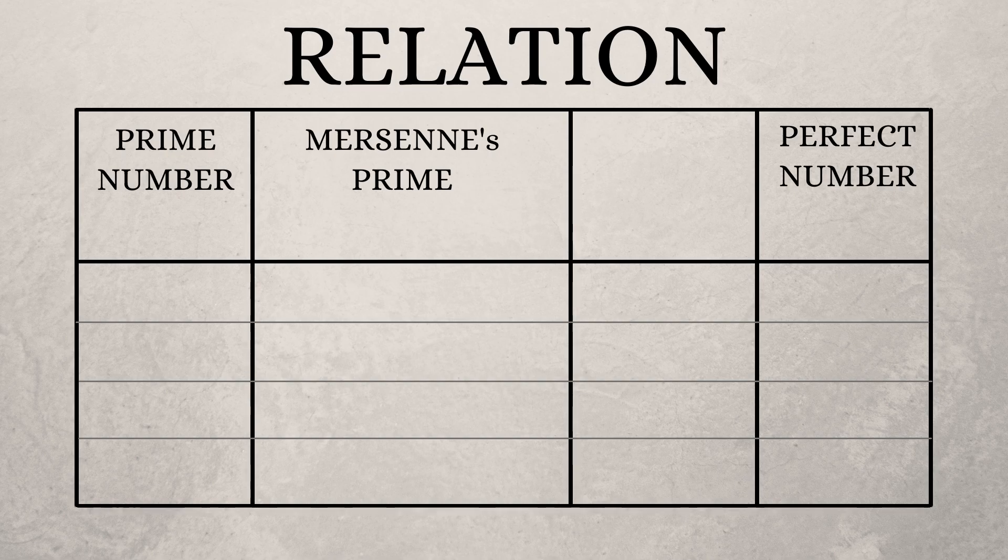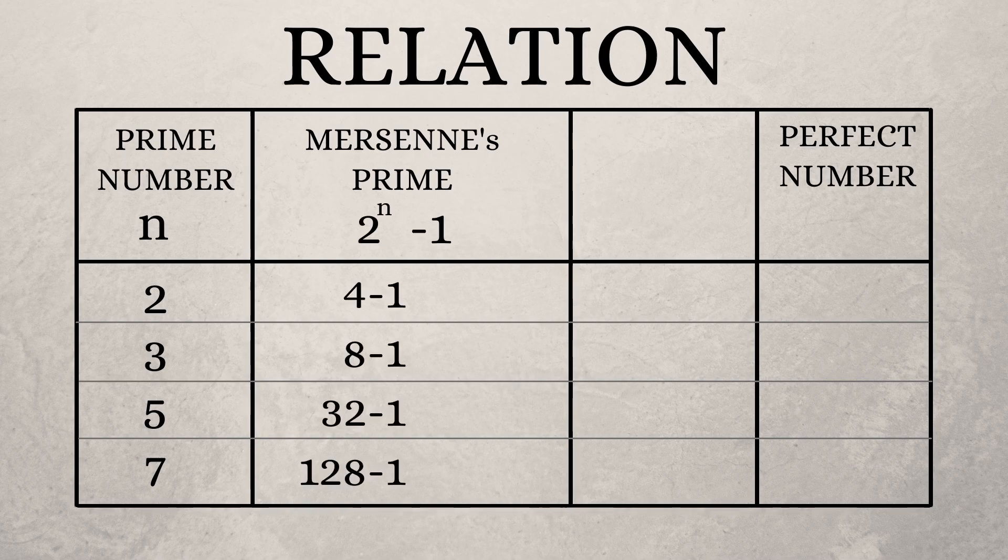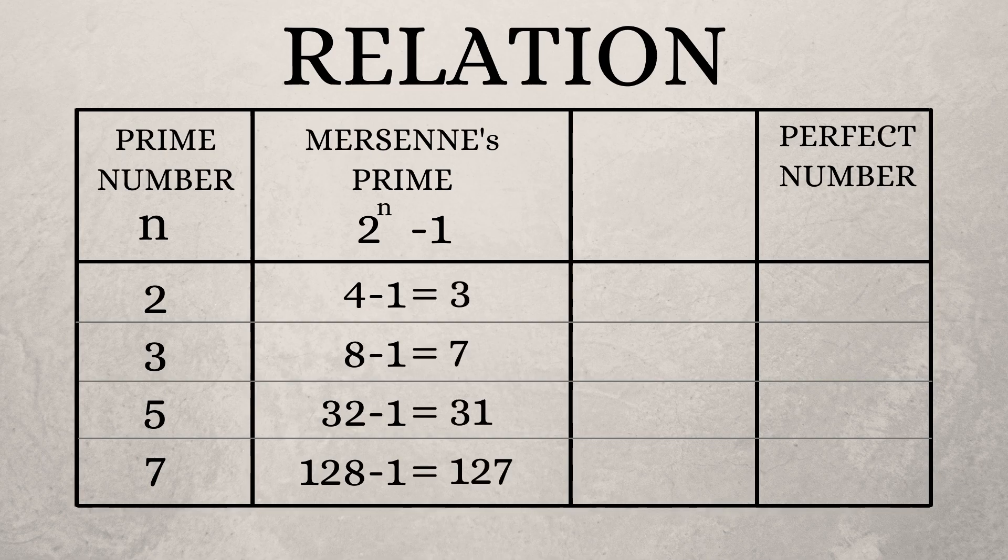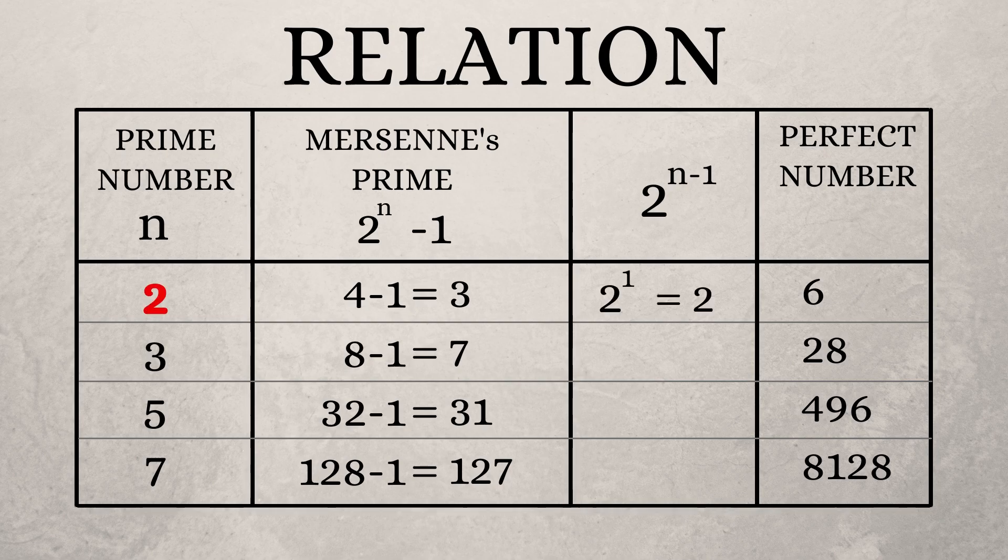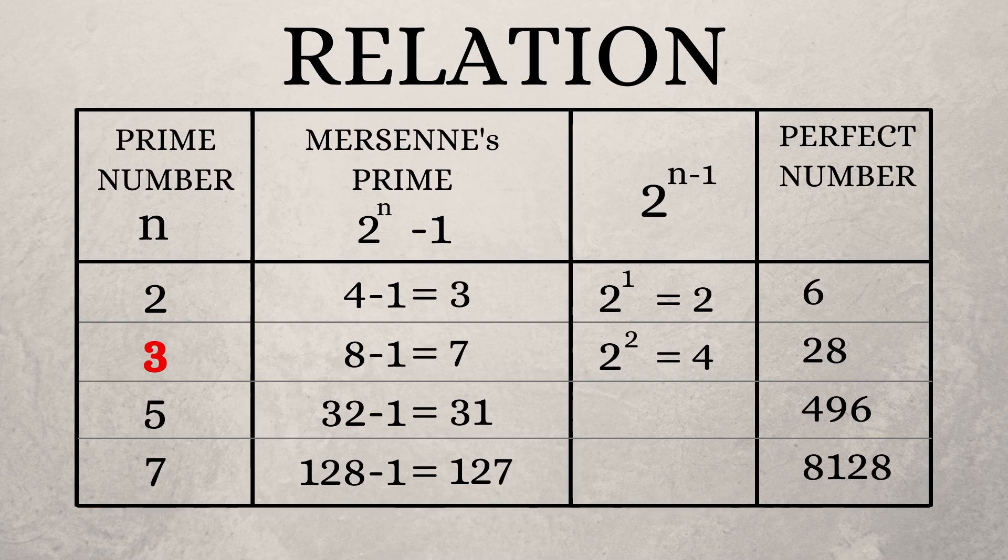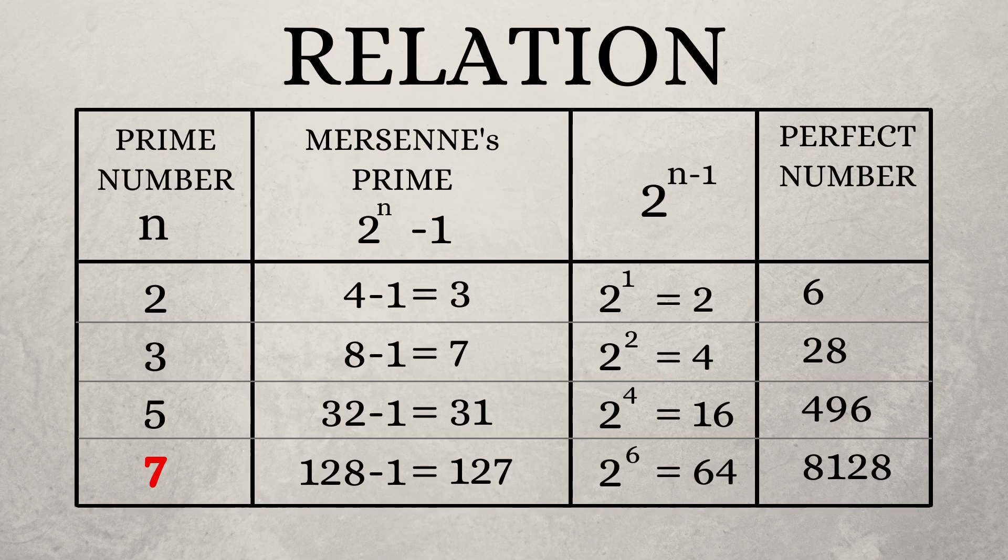Let's get into some details. First, let's list down the prime numbers as n. The corresponding Mersenne numbers are also written down as 2 to the power of n minus 1. So, that gives us our first four Mersenne primes. We also know the first four perfect numbers. So, let us also list them down. Now, let's find out another value, 2 to the power of n minus 1. So, when n is equal to 2, we find out 2 to the power of 1 which is 2. When n is equal to 3, let's find 2 to the power of 2 which is 4. When n is equal to 5, 2 to the power of 4 is 16. When n is equal to 7, 2 to the power of 6 will be 64.